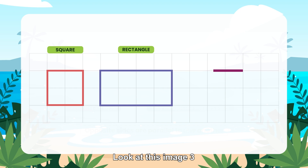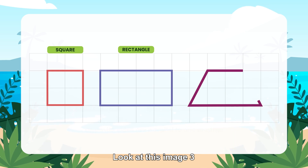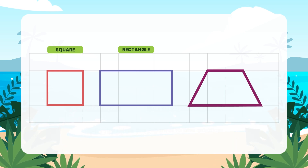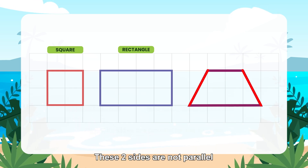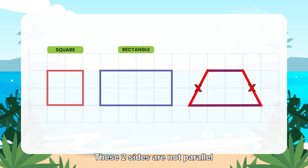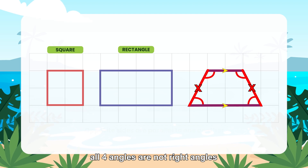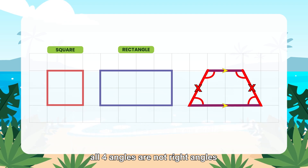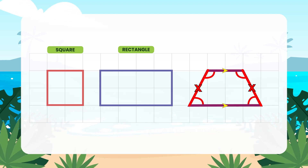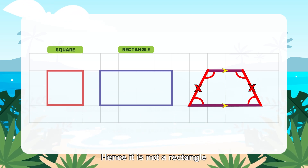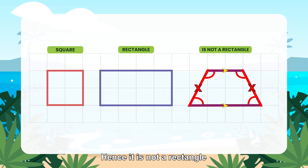Look at image 3. These two sides are not parallel, and all four angles are not right angles. Hence it is not a rectangle.